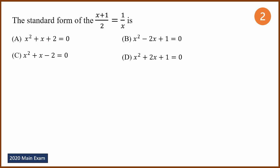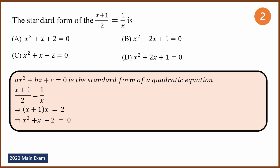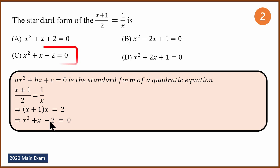Second question is again about standard form. They have given the expression: x plus 1 divided by 2 equals 1 by x, and asked us to convert it to standard form. Taking LCM and multiplying, we get x plus 1 multiplied by x equals 2, which simplifies to x squared plus x minus 2 equals 0. So the answer is C.